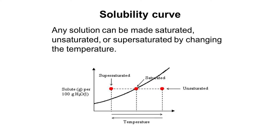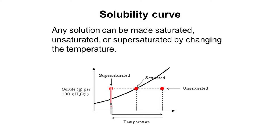Any solution can be made saturated, unsaturated, or supersaturated by changing the temperature. To make a supersaturated solution that stays in solution, you start at a temperature where it's saturated. Then you heat the same amount of solute and solvent to a higher temperature, and slowly cool it down without adding more solute. Since the solution is above the curve and the solute is still 100% in solution, it is considered supersaturated.